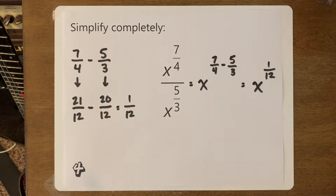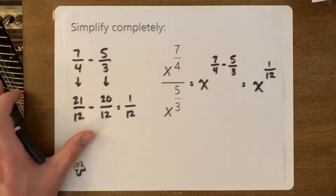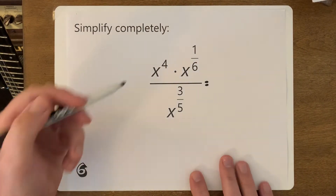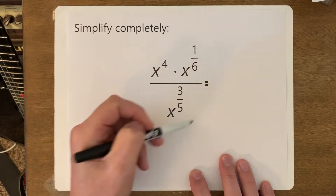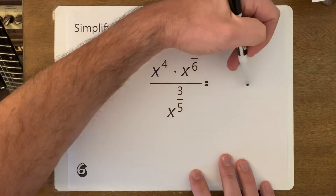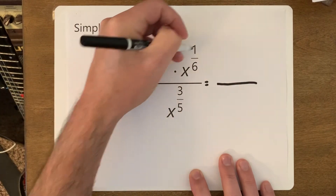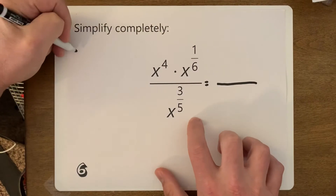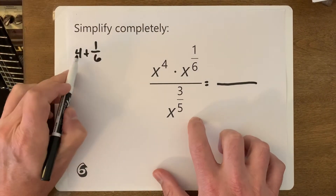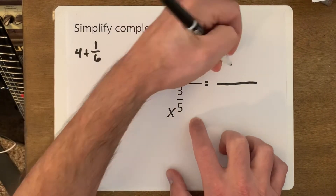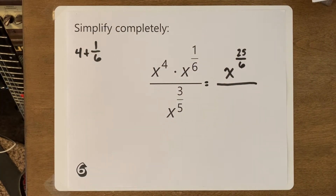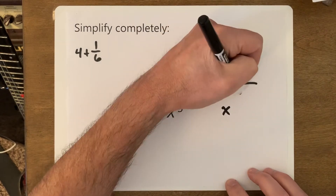Let's try this one — it's going to require a couple of steps. You've got the numerator you can clean up first, then the denominator. Concentrate on the numerator first: 4 plus 1 over 6. Treat this like a mixed number: 6 times 4 is 24, plus 1 is 25 — so 25 over 6. Students have a hard time with that, but it's really that simple. Then over here we still have 3 fifths.